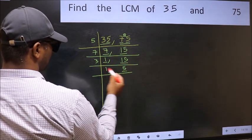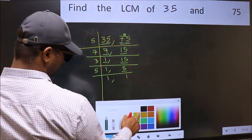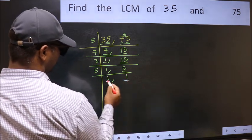Now here we have 5. 5 is a prime number. So 5 times 1 is 5. So we got 1 in both the places.